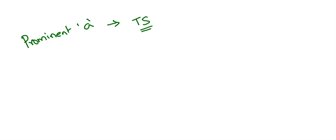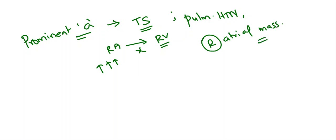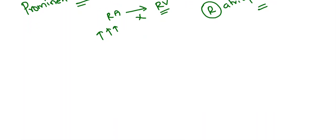In tricuspid stenosis, the blood from the right atrium cannot go into the right ventricle easily. As a result, the pressure in the right atrium is increased, resulting in a prominent A wave. Other conditions causing prominent A waves are pulmonary hypertension, any right atrial mass or thrombus, and complete AV block — where the atria contracts against a closed tricuspid valve, severely increasing pressure.